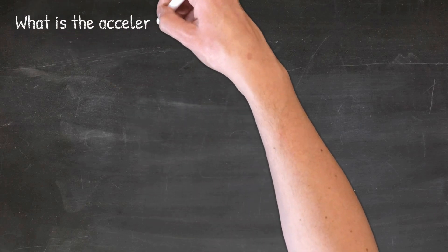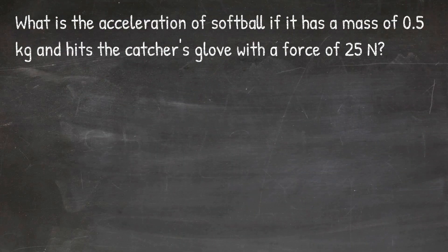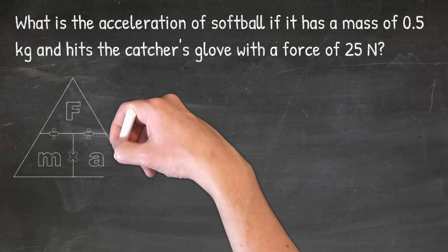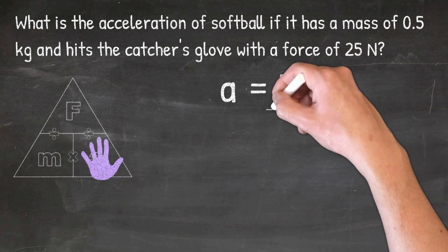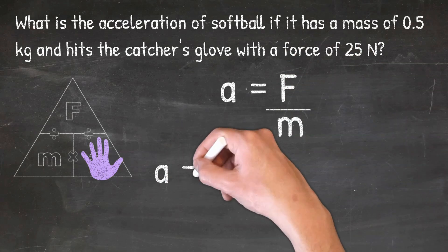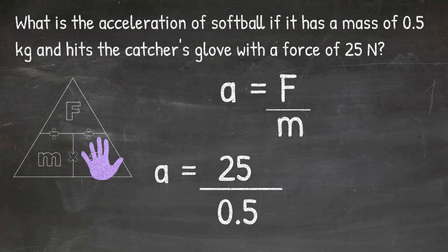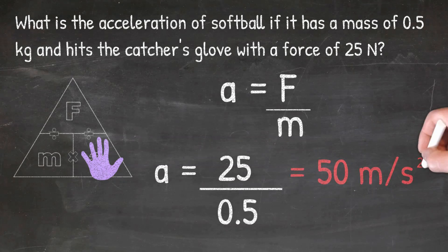In our final practice problem, we're going to solve for acceleration. The question says: what is the acceleration of a softball if it has a mass of 0.5 kilograms and hits the catcher's glove with a force of 25 Newtons? I cover up the letter A in my triangle, which tells me to do force divided by mass. So 25 divided by 0.5 gives me an acceleration of 50 meters per second squared.